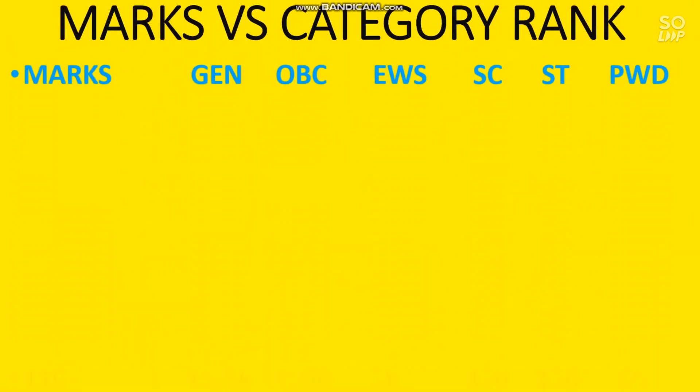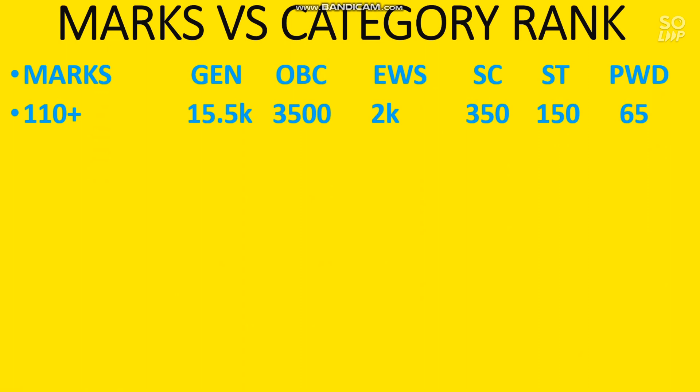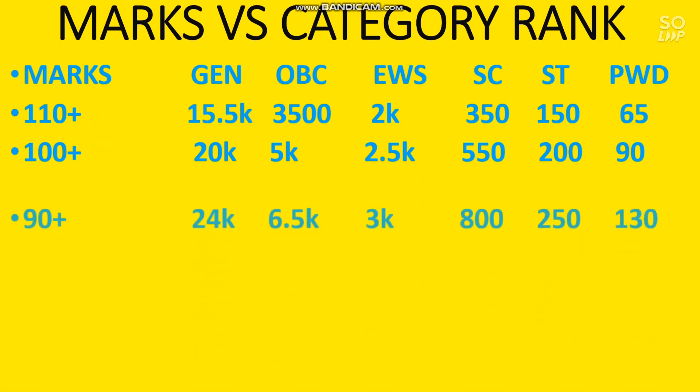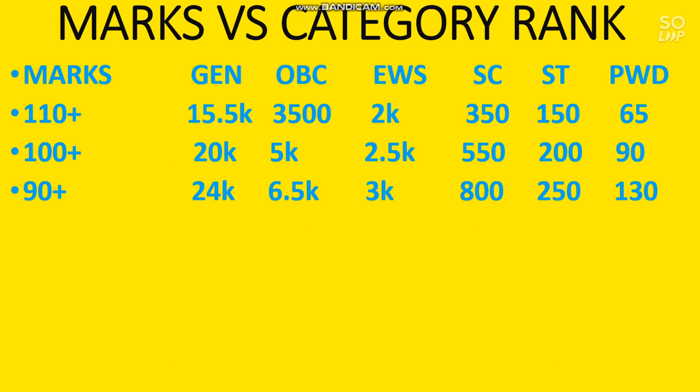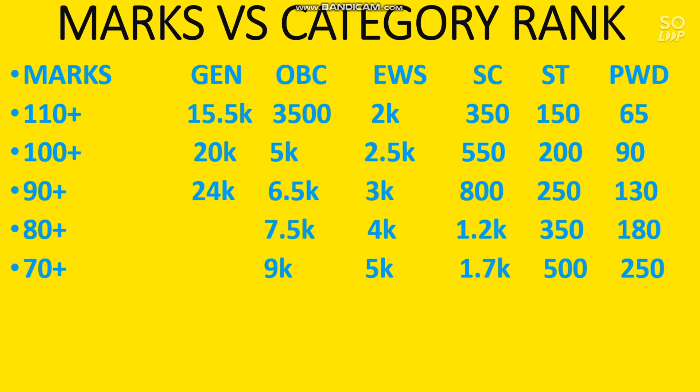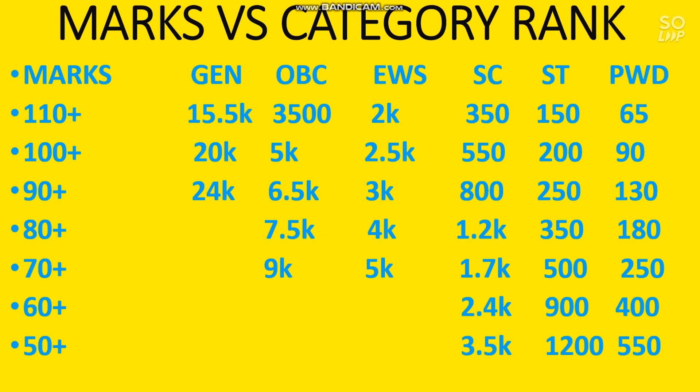For 110+ marks: General rank under 15,500. For 100+ marks: General under 20,000. For 90+: General under 24,000. I have not considered 80+ marks for General because IIT closing rank is around 20,000–22,000 for female and lower for male. However, other categories can get IITs at lower marks. For 80+: OBC rank under 7,500. For 70+: OBC rank under 9,000. For 60+: SC rank under 2,400. For 50+: SC rank under 3,500.